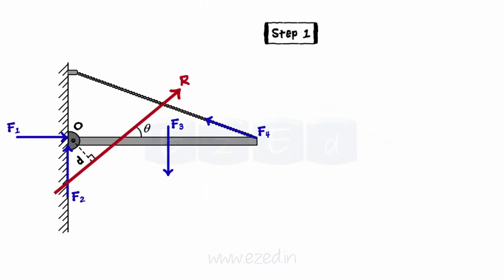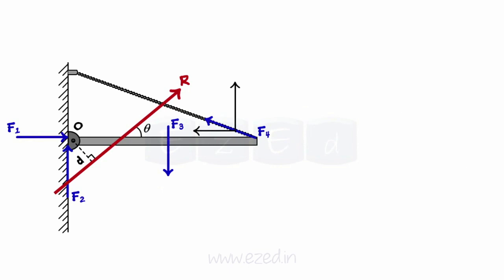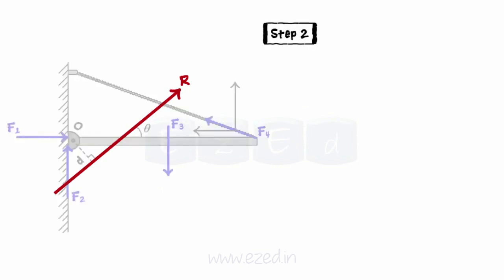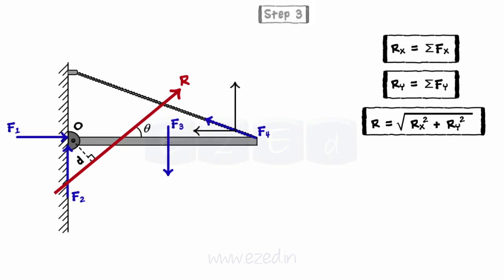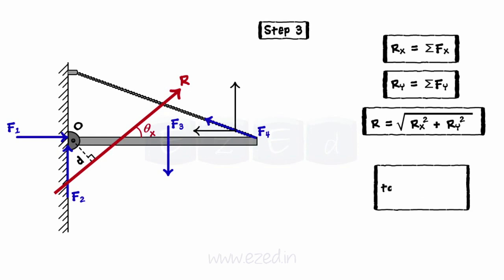First, all the inclined forces are resolved along the horizontal x-direction and the vertical y-direction. The magnitude of the resultant is found by calculating the components of the force in x and y-directions respectively. Then, we find the inclination of the resultant with respect to the horizontal with the formula tan-theta equals the component of resultant in y-direction to the component in x-direction.